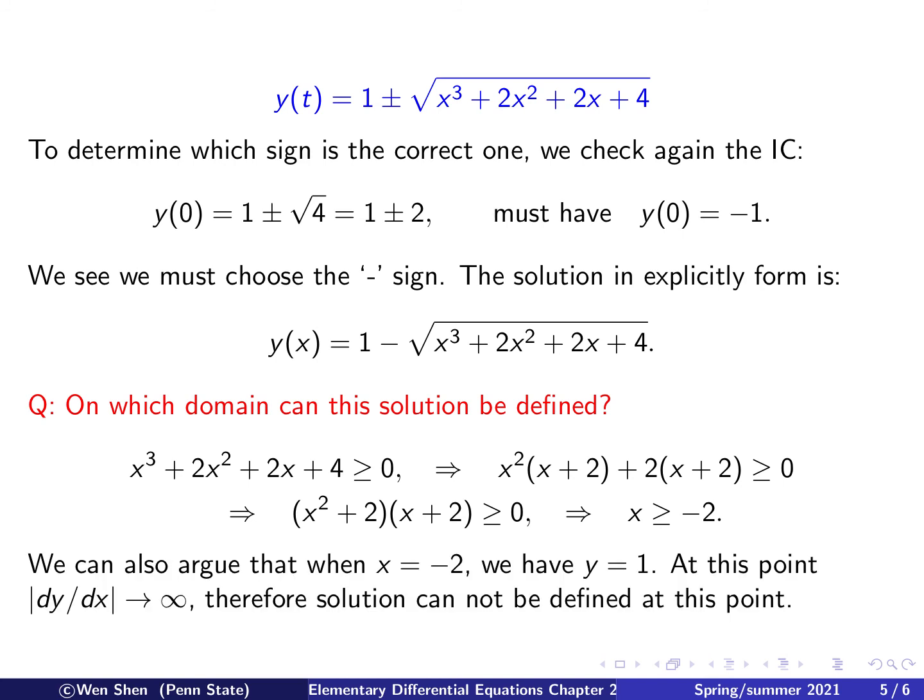It might seem a bit hard with this approach, which involves the factorization of this polynomial, which is not so obvious. There is an alternative argument. We see that when x is negative 2, we see that y equals 1 if we plug in. And then, recalling the differential equation, which contains the term (y minus 1) in the denominator, therefore, at this point, dy over dx will go to infinity.